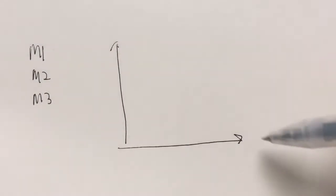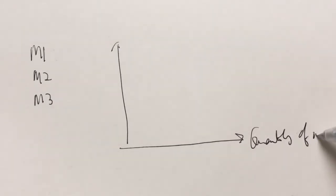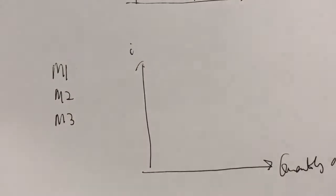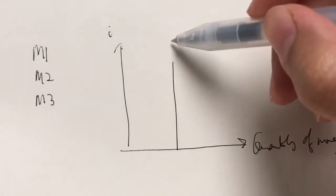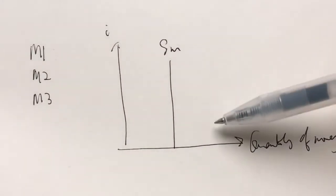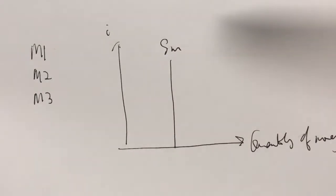But we haven't learned how the money supply looks like. If we have a diagram, here would be the quantity of money, and here is the real interest rate. The supply of money is usually a straight vertical line, because the supply of money does not depend on interest rates. Rather, it depends entirely on the decisions made by the central bank.